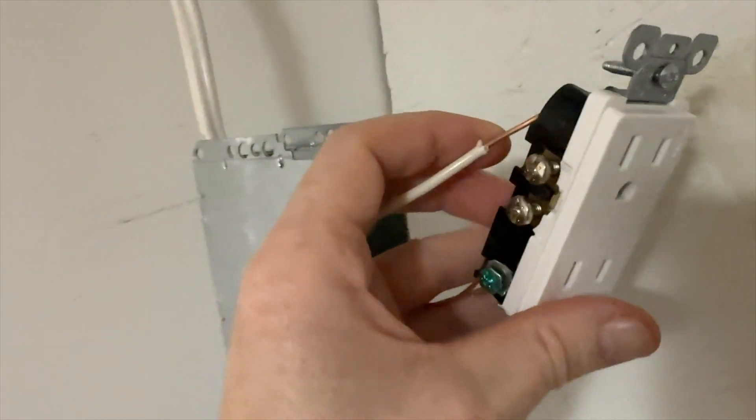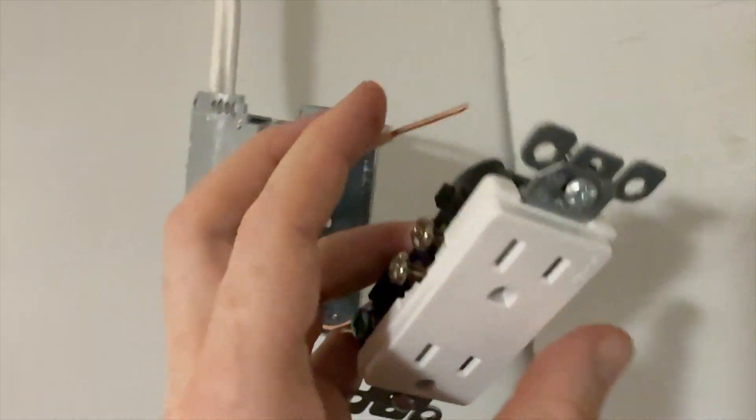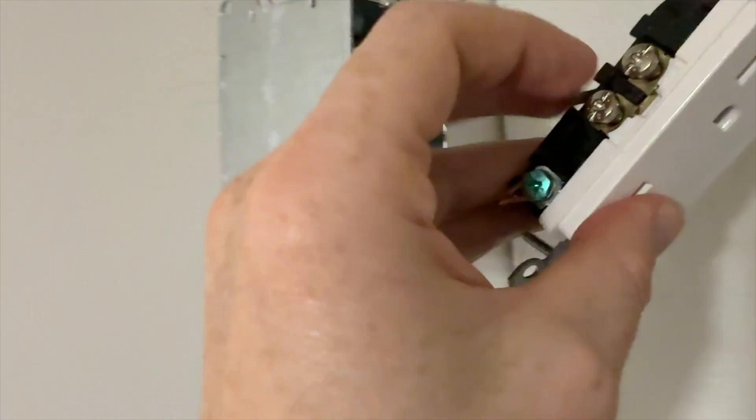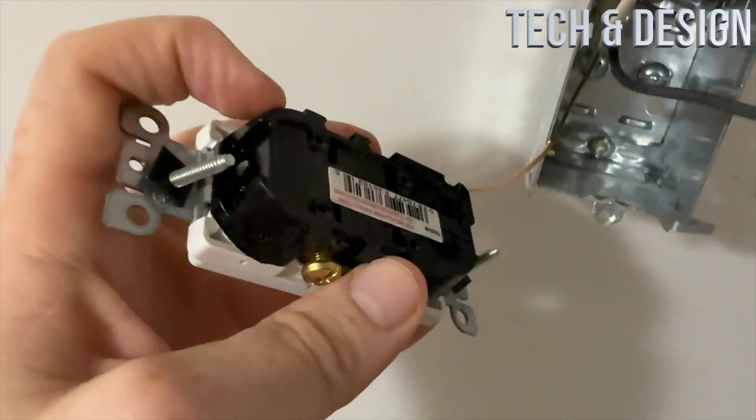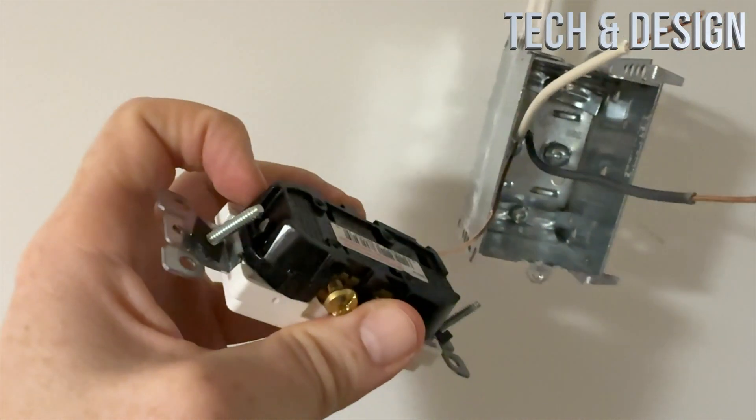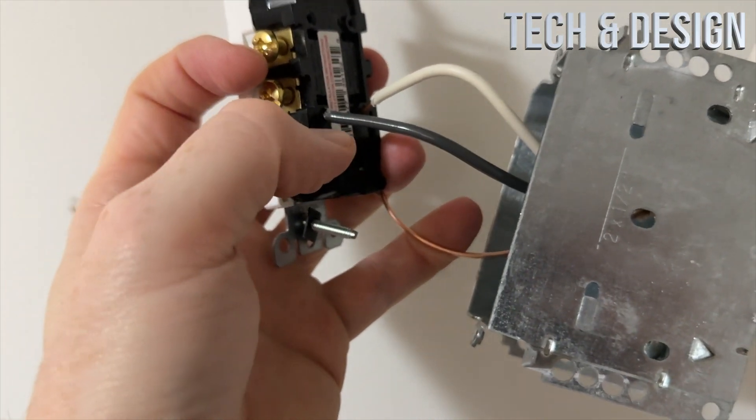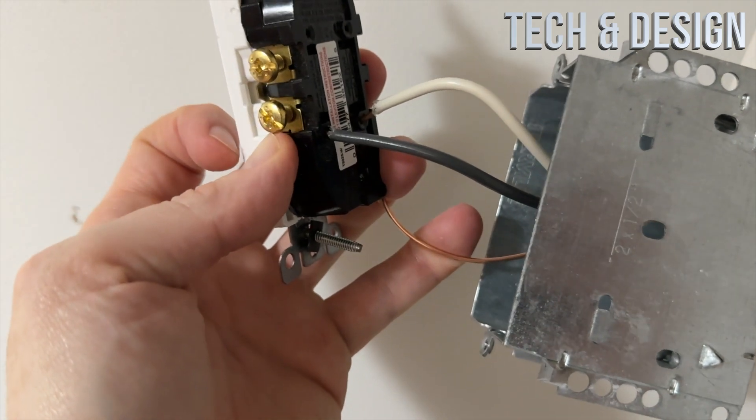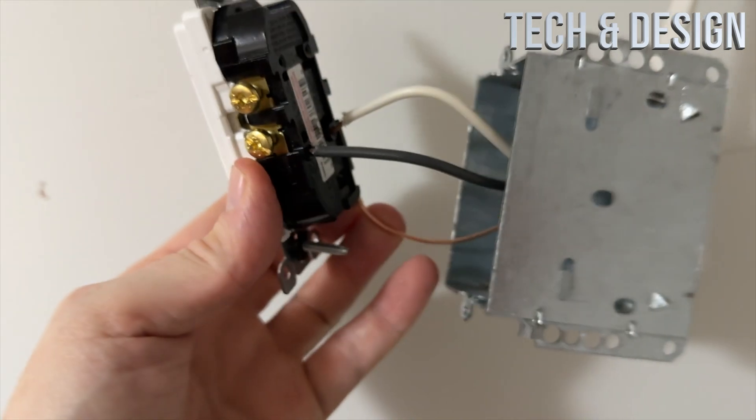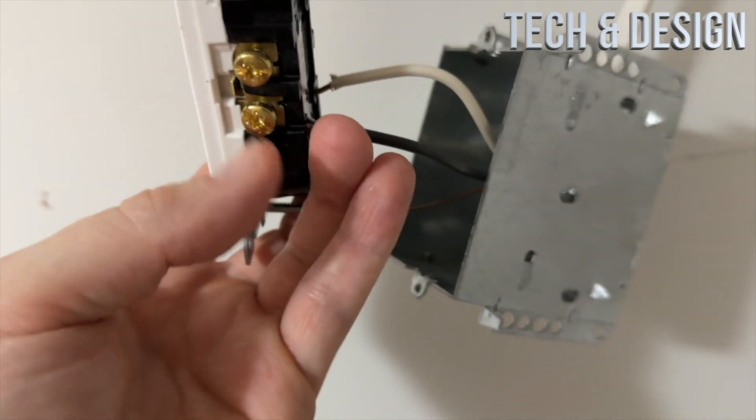You can screw the wire on here, or on the back you'll see holes where you can insert it. You can put the wire through here or through here. If you do it through the back holes, it's harder to get out, so if at some point you have to change this, it'll be harder than just unscrewing it.